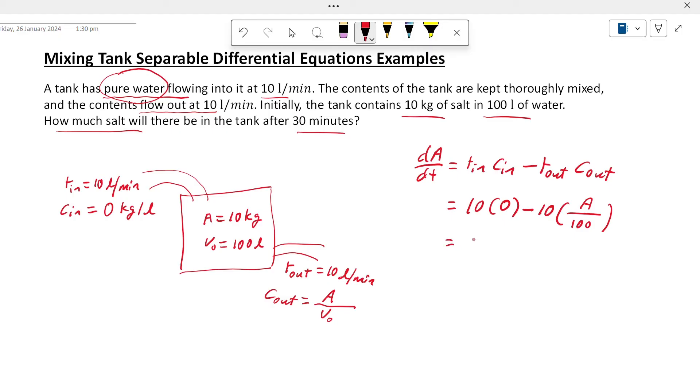So in that case, we have minus A divided by 10. This represents the rate of change of salt in the tank.